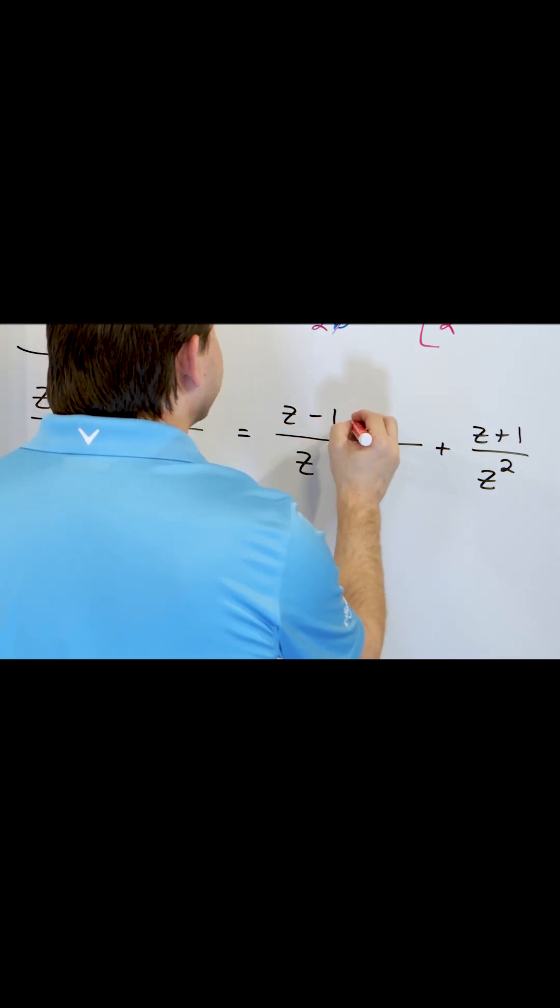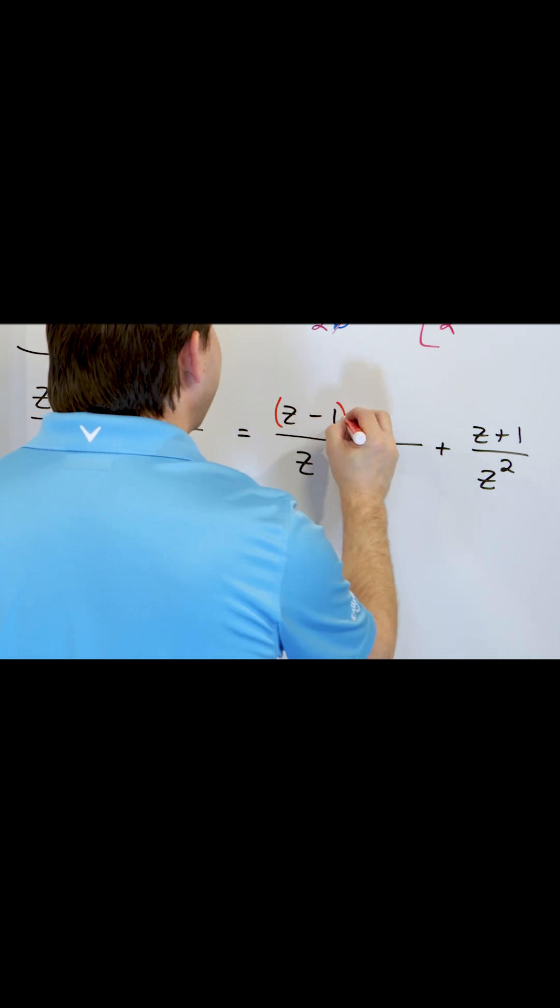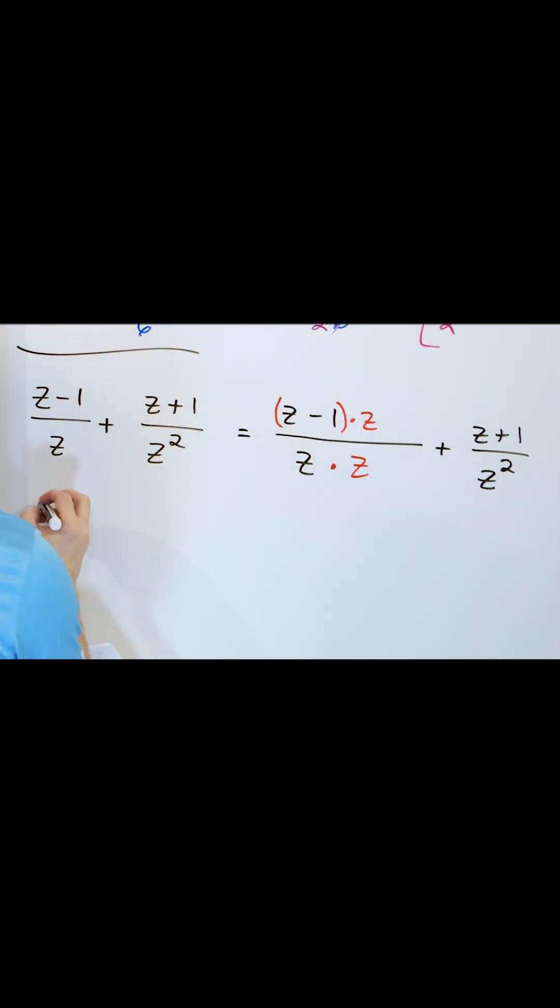But if I multiply this then I have to multiply the top, but I have to be careful, wrap it in parentheses times z. Multiplying and distributing this in will be z squared minus z on the bottom, z times z is z squared.